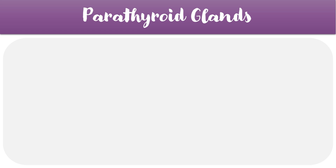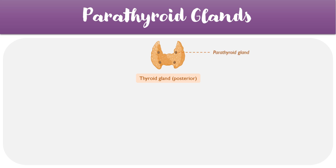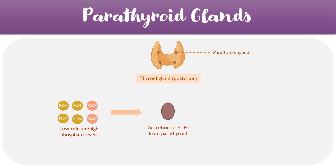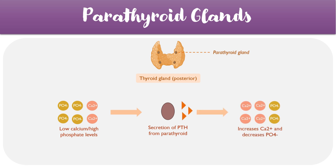To start this topic, it's worth reviewing the basic anatomy and physiology of the parathyroid glands. We have four parathyroid glands which sit on the posterior aspect of the thyroid gland, with one of them being labelled here. In response to low levels of calcium or high levels of phosphate, the parathyroid gland begins to secrete PTH or parathyroid hormone into the blood. This PTH then acts to increase serum calcium levels and decrease serum phosphate, thereby restoring the balance.